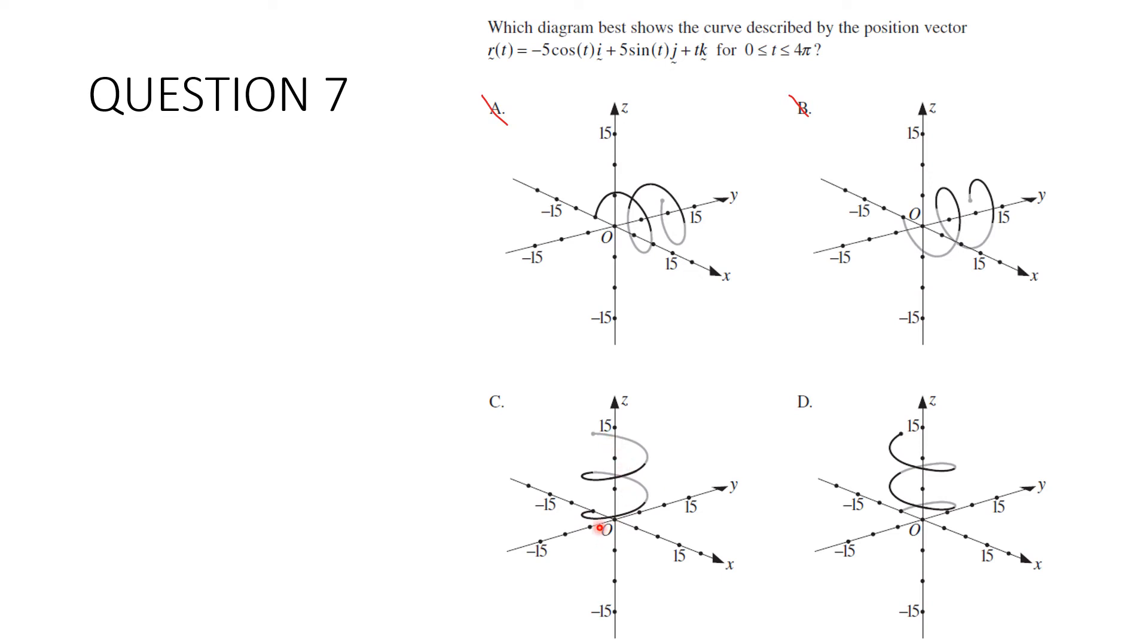So if we substitute in, say, pi on 2, we'll be able to figure out whether it's negative here or positive here. So let's do that. We're going to substitute in t is equal to pi on 2. So r of pi on 2 is equal to negative 5 cos pi on 2 i plus 5 sine pi on 2 j plus pi on 2 k. Now, of course, cos pi on 2 is 0. So we've got 0 i and sine pi on 2 is 1. So that's 5 j and then plus pi on 2 k. So we can tell from that it's actually going to be this one over here. It's in the positive y direction. This one is in the negative y direction. So our answer is D.